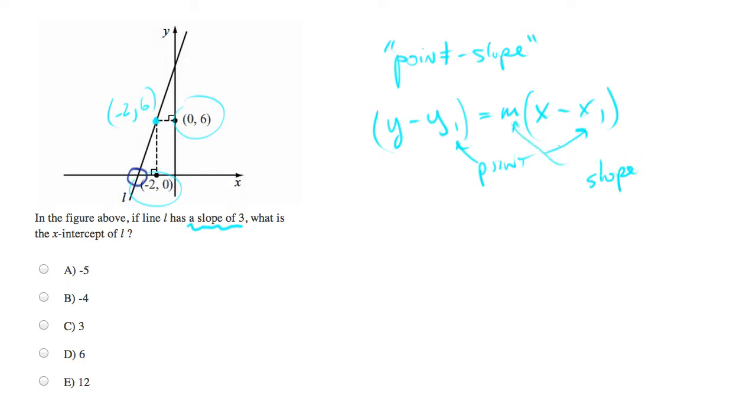We've been given both of those, so we can actually plug them in. Let's do that. We have y minus 6 equals m, we've been told is 3, times x minus x1 is negative 2. So this is an equation for our line. We could simplify this or we could just keep plugging away.